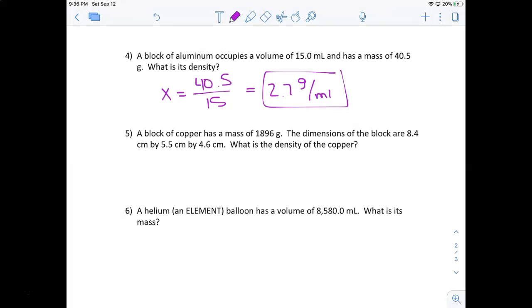Next one's a little funny. We're solving for density. They give us mass. This time, they're telling us that the copper is a block. And they're giving us the length, the width, and the height. They're giving us the three sides. So how do we get the volume? We do length times width times height, 8.4 times 5.5 times 4.6. So this one was a little more challenging. So my volume was 212.52. So if I do 1896 divided by 212.52, I get 8.9 grams per milliliter.